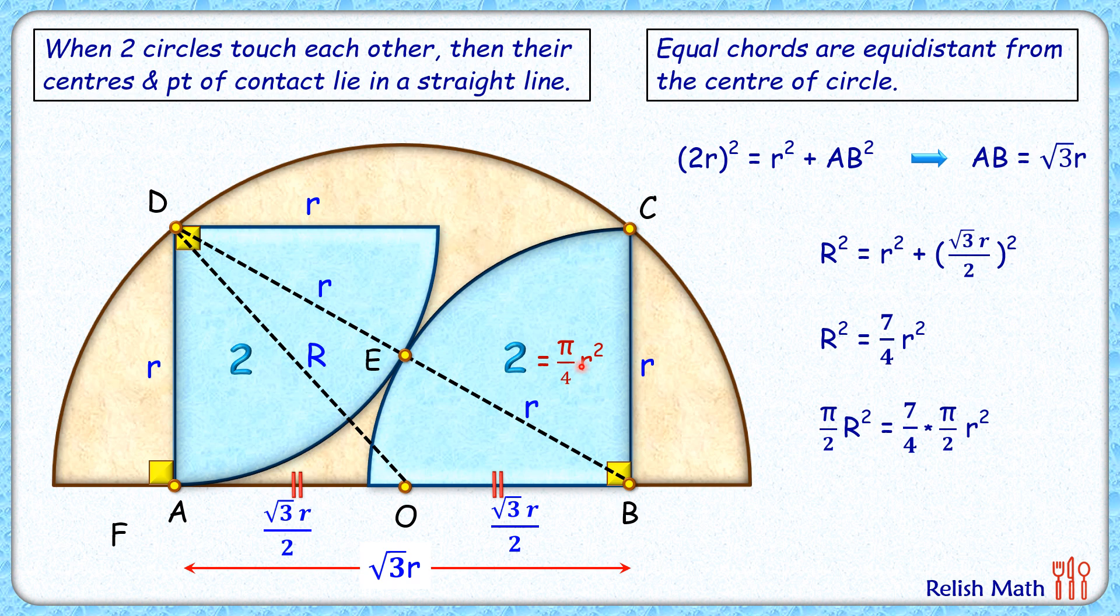So πr²/4 is 2 cm², and twice that, which is πr²/2, is 4 cm². Replacing πr²/2 with 4 and simplifying, we get the area of this brown semicircle, which we had to find, as 7 cm². That's our answer.